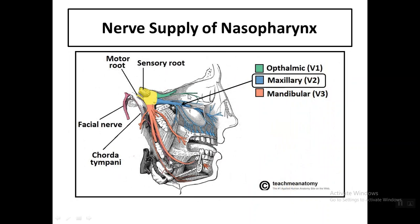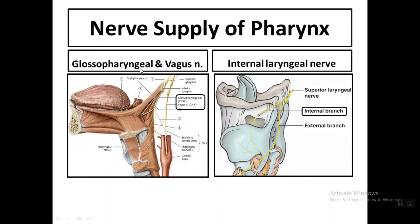To summarize the nerve supply: the nasopharynx is supplied by the maxillary division of the trigeminal nerve (V2) for sensory function. The oropharynx and laryngopharynx are supplied by the glossopharyngeal and vagus nerves — the glossopharyngeal gives branches to the oropharynx and motor supply to the stylopharyngeus muscle.